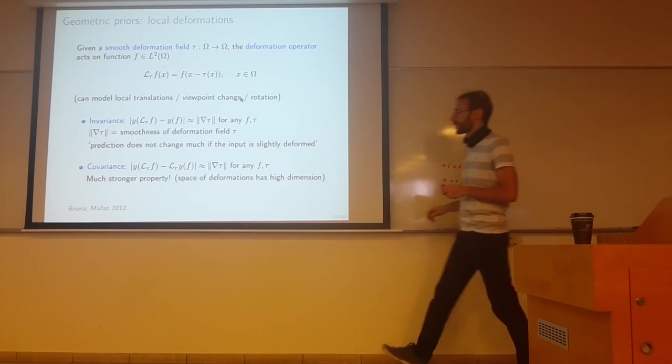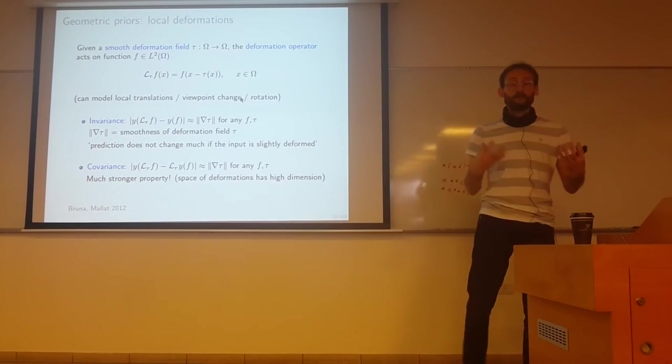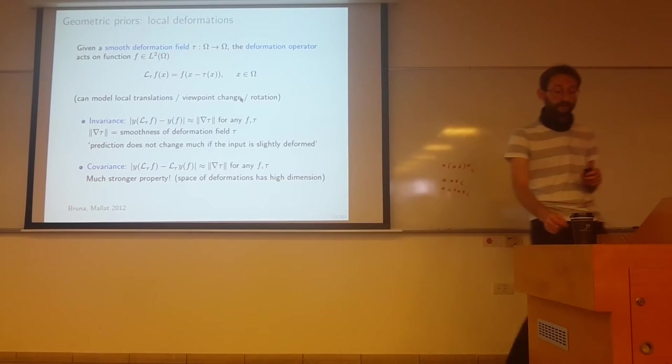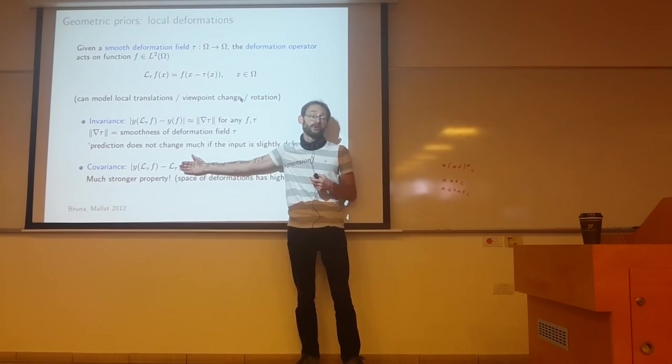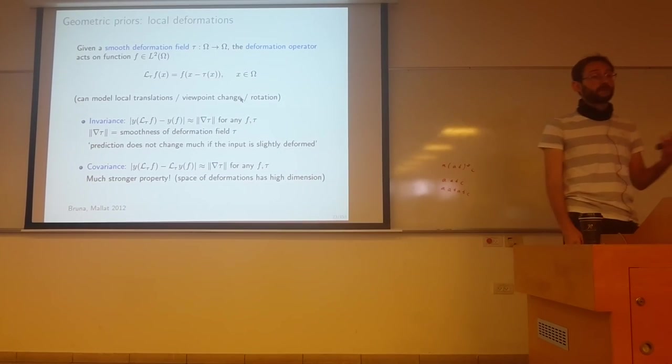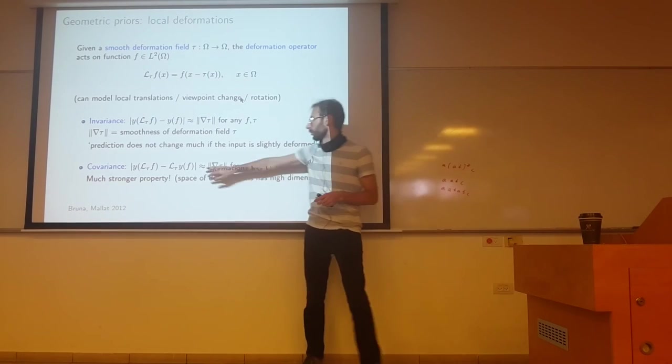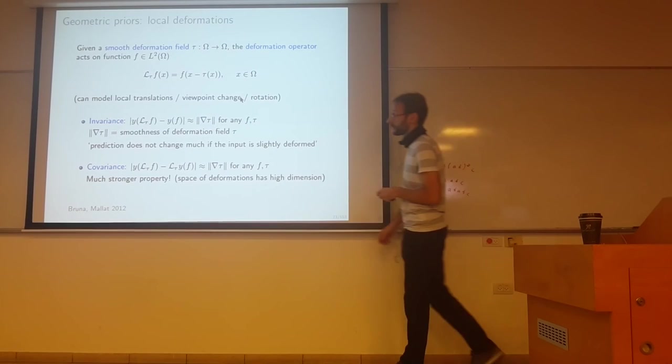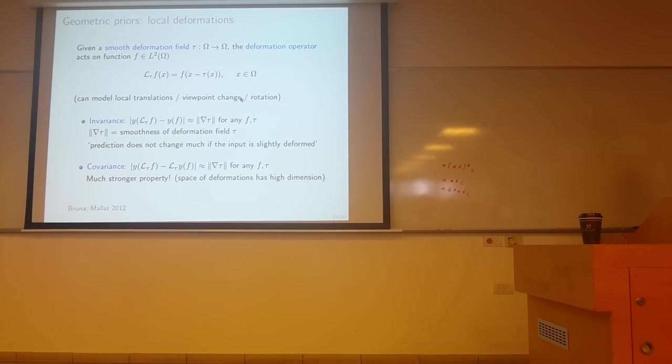The equivalent property of covariance - here assume it's a regression problem. I want the difference between y applied to the deformed version of f compared to y applied to f then deformed to be proportional to the norm of the gradient of tau. [Discussion about dimensions and norms] You should use correct criteria of comparing these two things. This is actually a much stronger property because the space of deformations has very high dimension. In this case, the covariance property is much stronger.